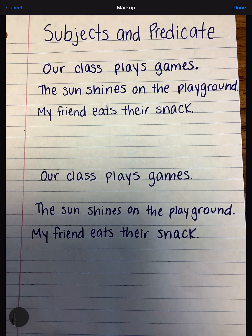Hi everybody, my name is Ms. Heaney and today we are going to be talking about subjects and predicates. In basic sentences, there are subjects and predicates. How we can figure out where the subject is and where the predicate is is we are looking for the verb. The verb is the action word of the sentence and this can help signal where the subject ends and where the predicate begins.